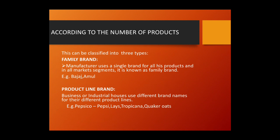The third type is according to the number of products. The first one is the family brand, also known as the umbrella brand, wherein the manufacturer uses a single brand for all his products in all market segments. Examples include Amul, which has a wide product line including milk, ghee, butter, and ice creams — all using the same Amul name across its product varieties.